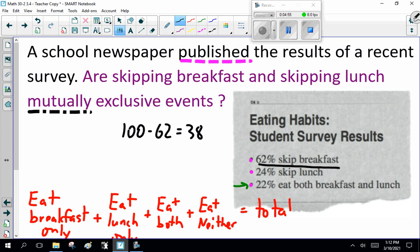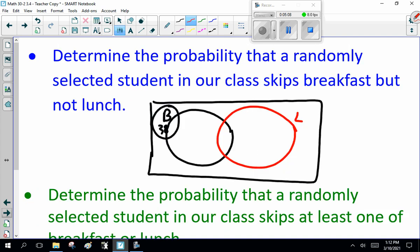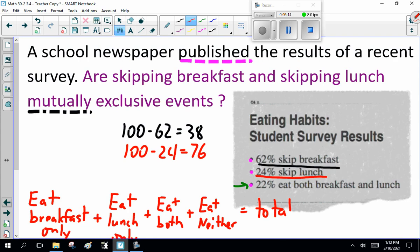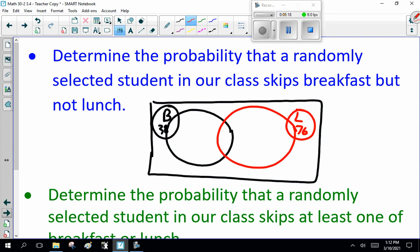Now, 24% skip lunch. That means 100% minus 24 eat lunch. So that is 76% eat lunch. Now, one little bit of information we're given: 22% eat both. Now, can we figure out the rest? Yes. 38 minus 22 is 16% eat breakfast only. 76 minus 22 is 54 eat lunch only.